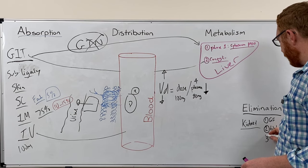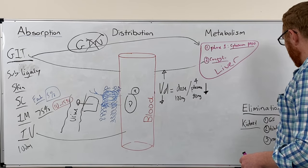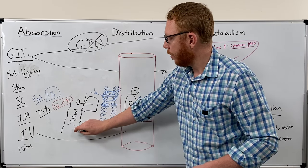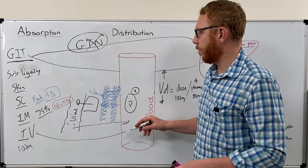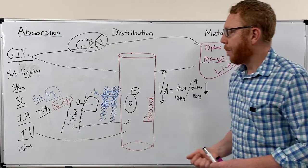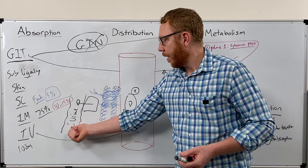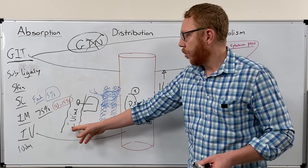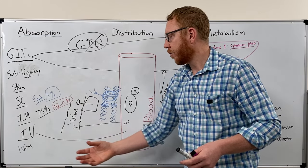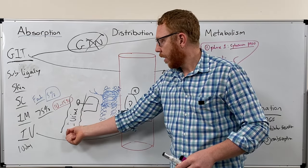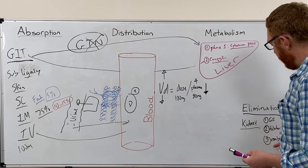Finally, we have reabsorption. Any molecule in the urine has the potential, if it's small enough or lipid-soluble, to be put back into the blood through the nephron. But if the urine has a different pH from the drug — for instance, if the drug is a weak acid and the urine is a weak base — it can alter it enough to allow excretion. And vice versa: if the drug is a weak base and the urine is a weak acid, you can excrete it that way as well. That's the method through the kidney.